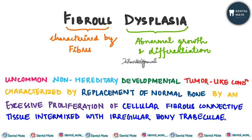With this definition we have an idea of the features seen in fibrous dysplasia. It is a tumor-like condition — developmental and non-hereditary — and what happens is there is replacement of normal bone by excessive proliferation of cellular fibrous connective tissue, which is mixed with irregular bony trabeculae.